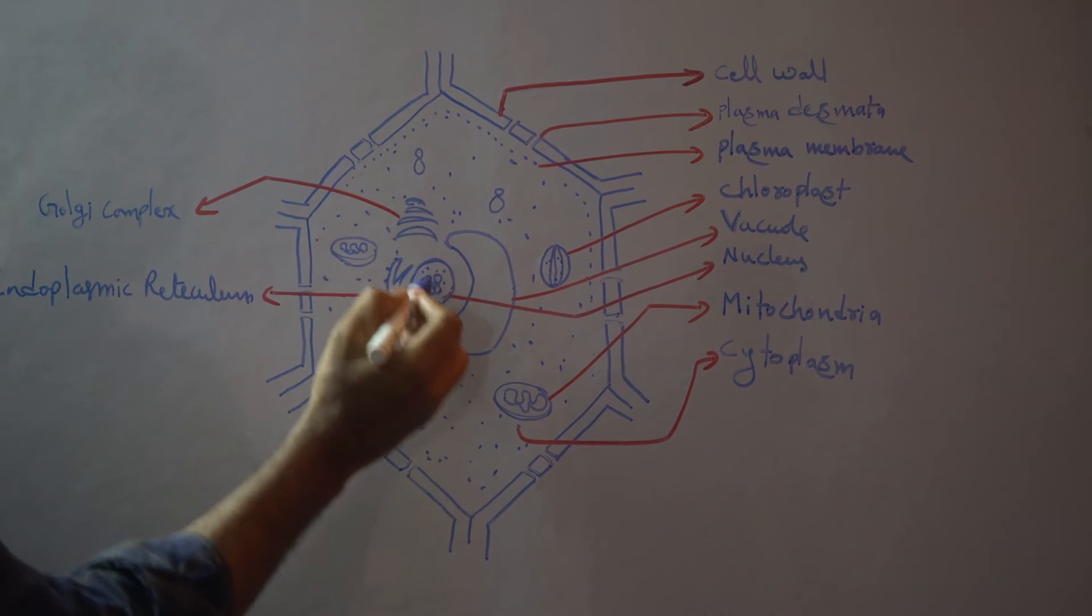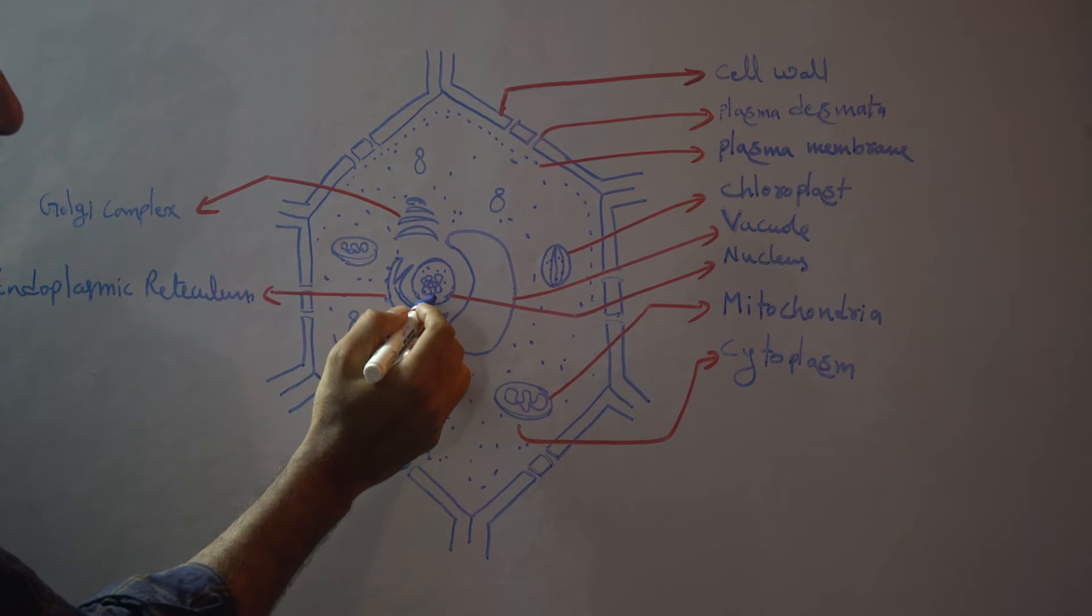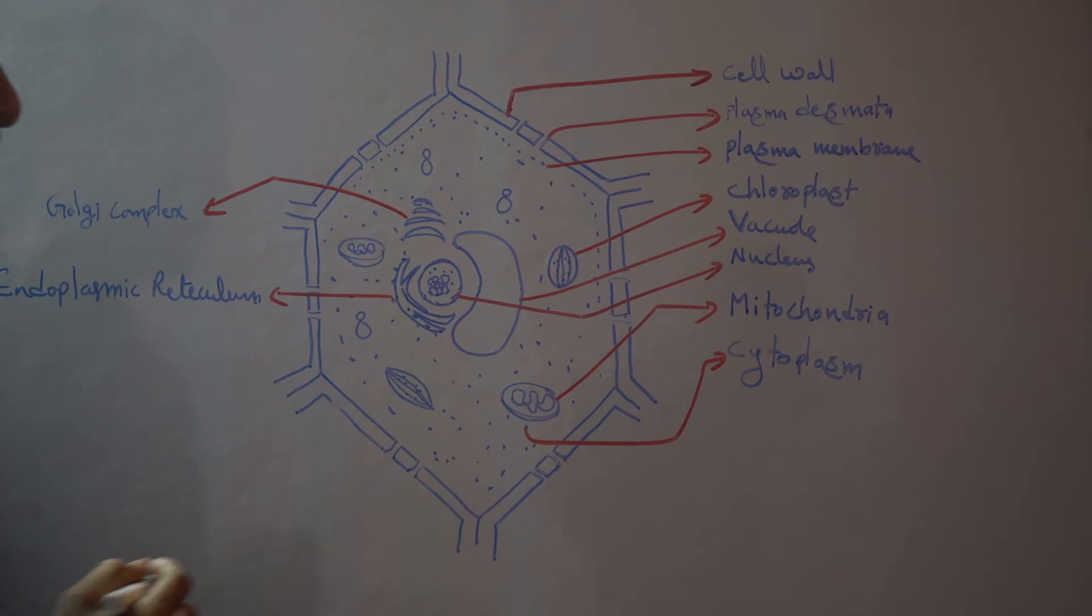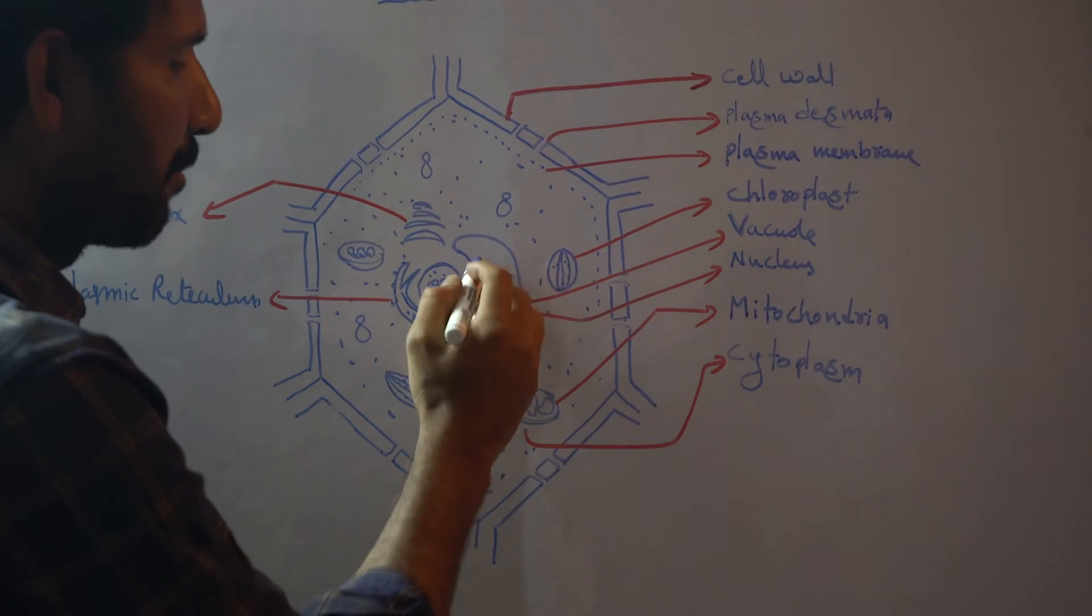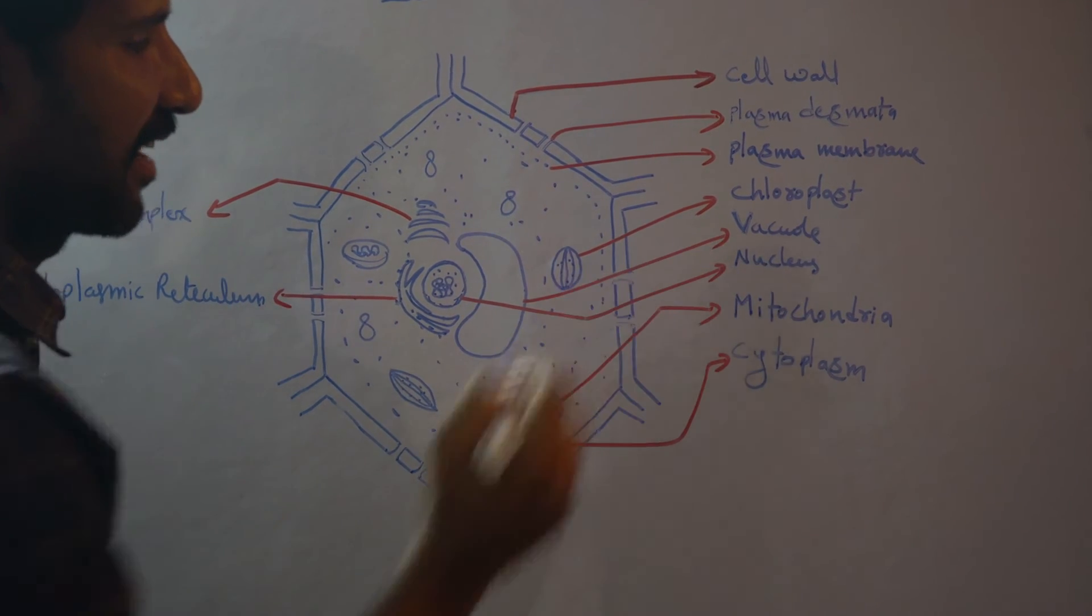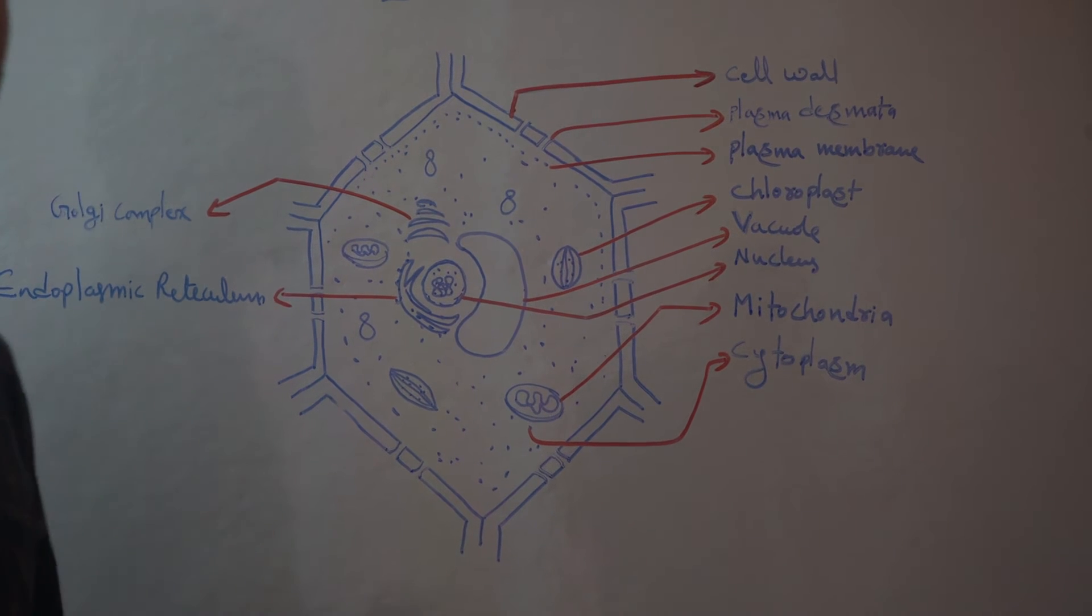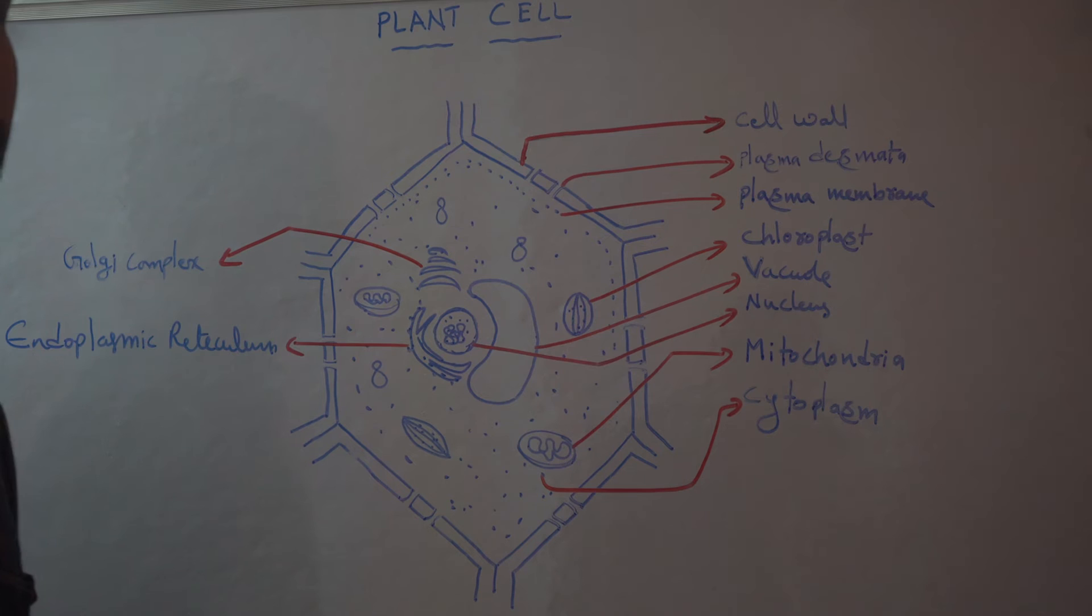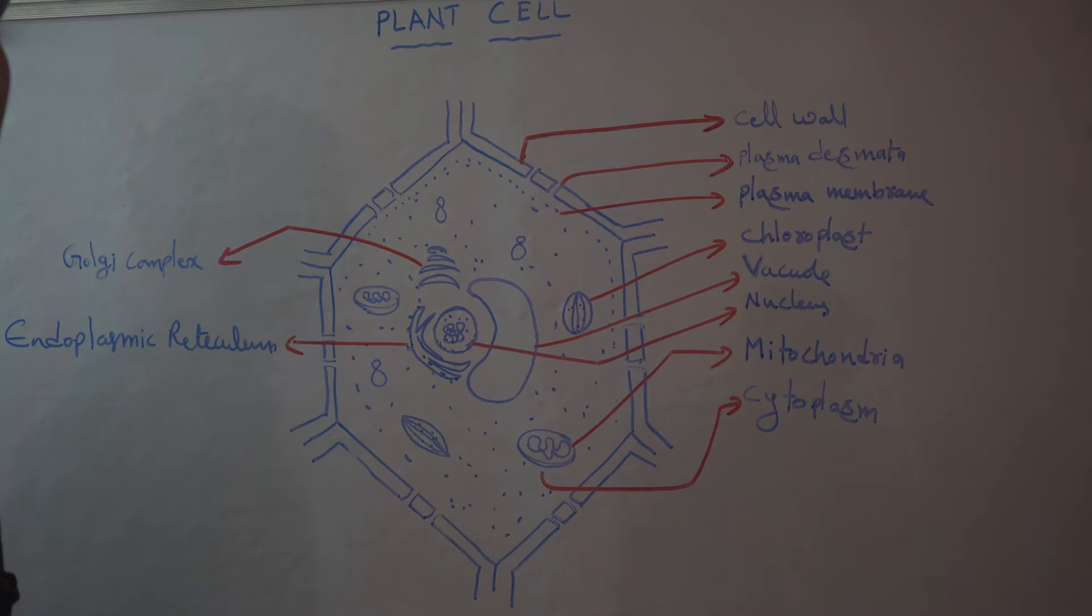We can see here around the nucleus, some endoplasmic reticulum is present, and a big vacuole is present here. Especially chloroplasts are special structures present in plant cells that we cannot see in animal cells.